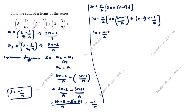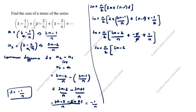Sn = n/2 × ((6n - 2)/n + (-(n-1)/n)). Multiplying out: (6n - 2)/n + 1/n, with the n terms cancelling. This gives Sn = n/2 × ((6n - 2)/n - 1 + 1/n).